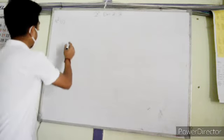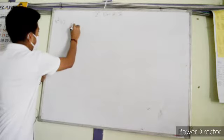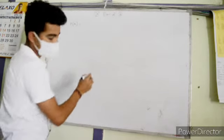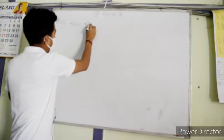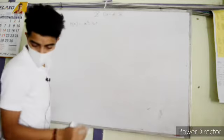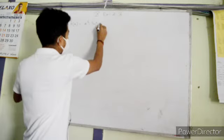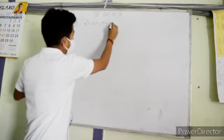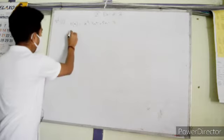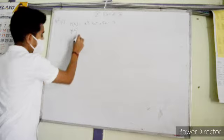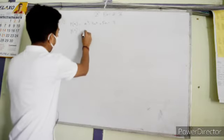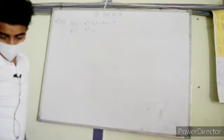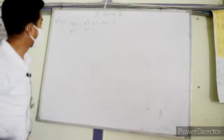So we have to divide p(x). p(x) is x³ minus 2x² plus 5x minus 3, and g(x) — the value of g(x) is x² minus 2. So we have x³ minus 2x² plus 5x minus 3 divided by x² minus 2.